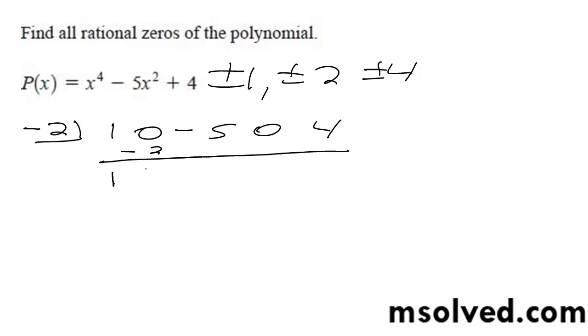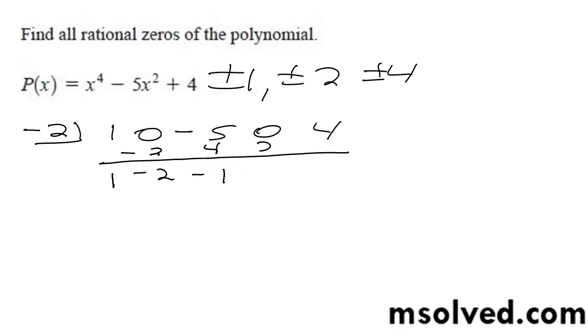So I get 1, negative 2, negative 2, 4, negative 1, 2, 2, negative 4, 0. So that works.